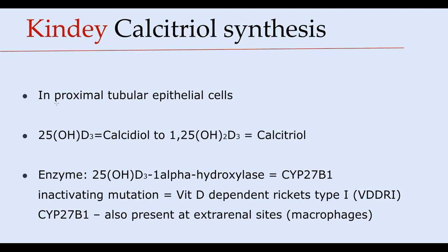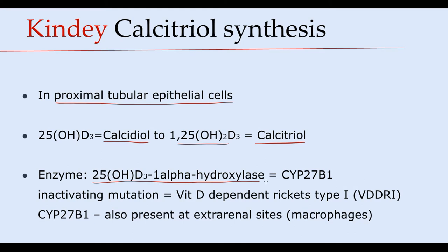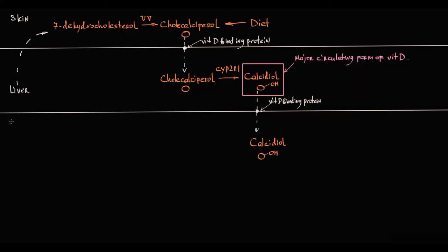Once calcidiol is delivered to the kidney via vitamin D binding protein, it undergoes glomerular filtration and is taken up by proximal tubular epithelial cells. In the proximal renal tubule, calcidiol is hydroxylated to 1α,25-dihydroxyvitamin D3, also known as calcitriol. This reaction is catalyzed by the enzyme 25-hydroxyvitamin D3-1α-hydroxylase, also called cytochrome P27B1. In the kidney, calcidiol is hydroxylated by cytochrome P27B1 to calcitriol, which now has two additional hydroxy groups that enable this molecule to bind to the vitamin D receptor and thereby exert its biological effects.